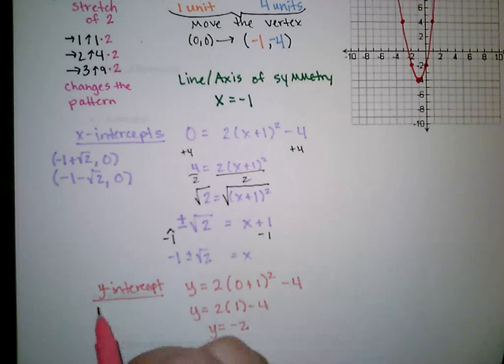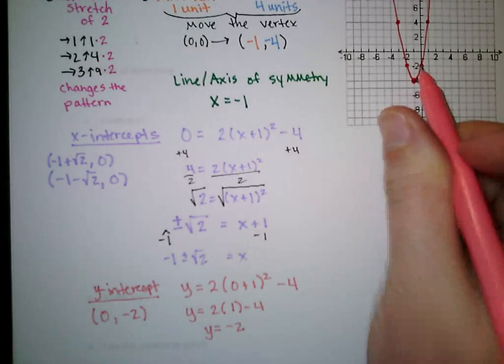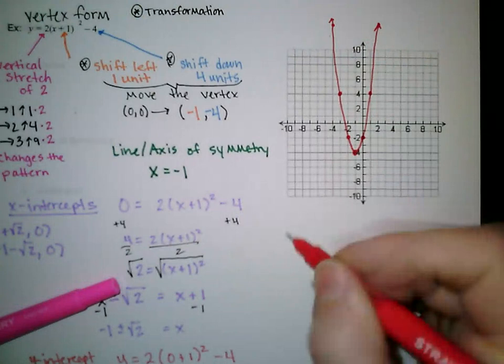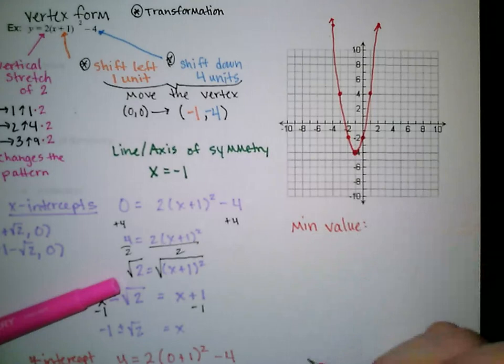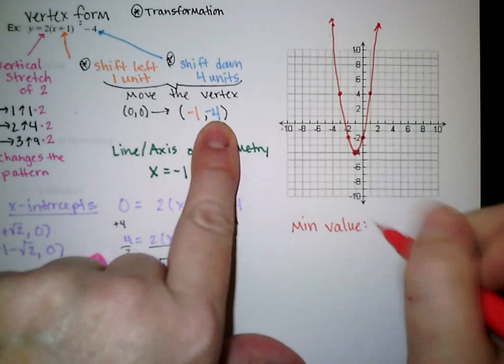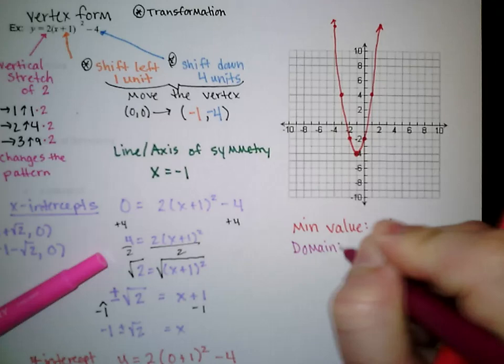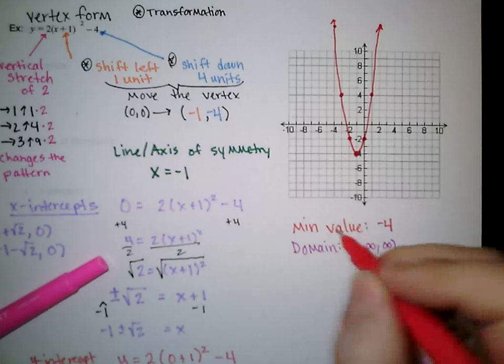Since this parabola opens up, we have a minimum value. The minimum value is the y-value of the vertex — the vertex is (negative 1, negative 4), so the minimum value is negative 4. For domain and range: the domain is the same for every parabola, negative infinity to infinity. The range is related to the minimum value: from negative 4 up to infinity, with a bracket on negative 4 since we definitely have an ordered pair there.